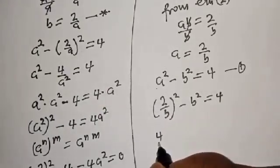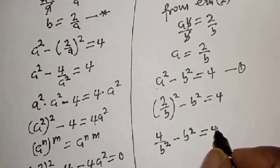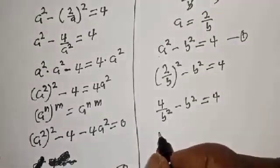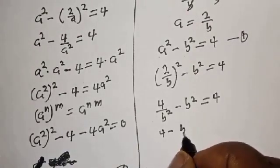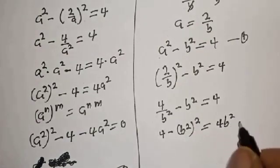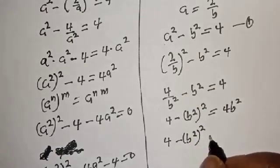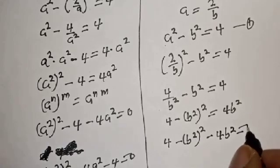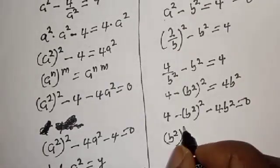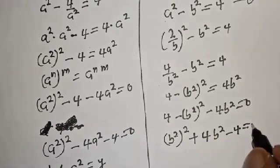This gives 4 over b squared minus b squared equals 4. Multiplying through by b squared: 4 minus b to the power 4 equals 4b squared. Rearranging: b to the power 4 plus 4b squared minus 4 equals 0. This is a quadratic equation in b squared.